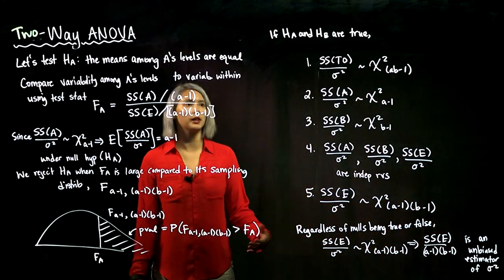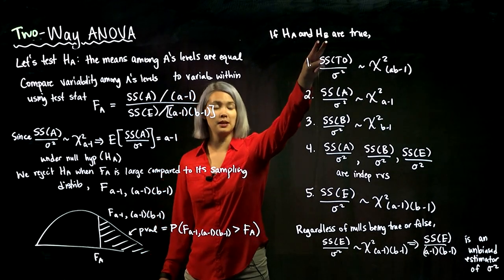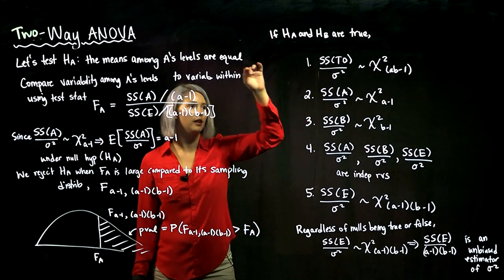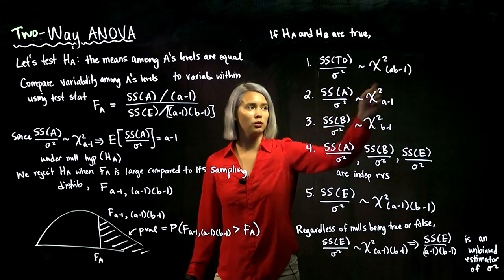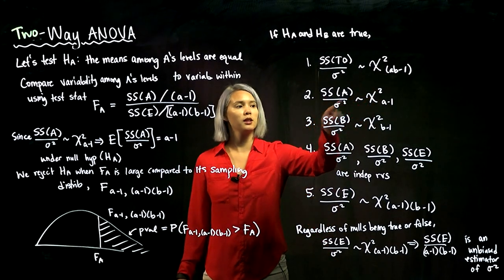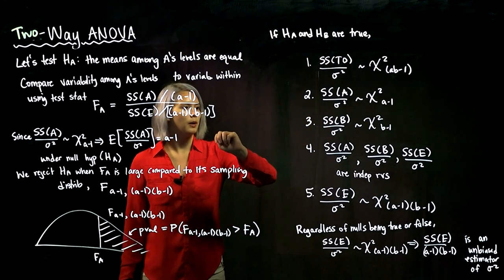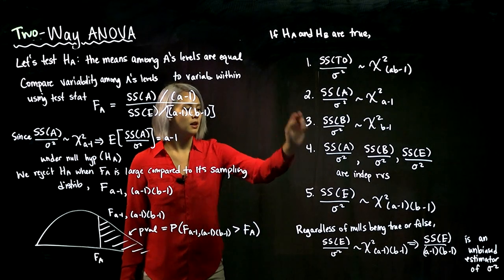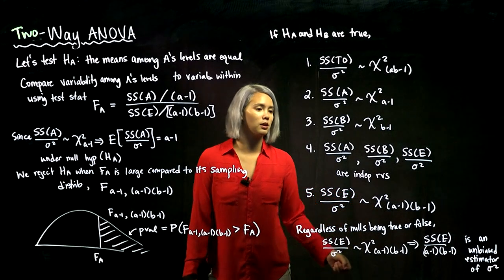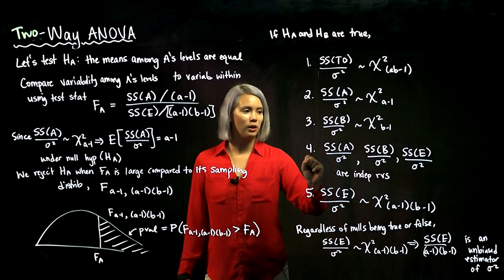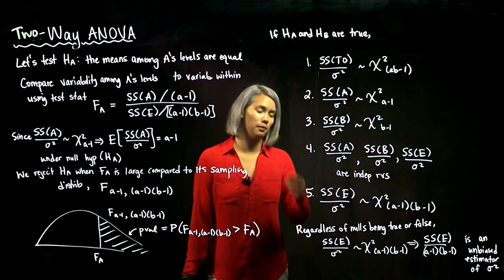In the previous video we figured out a few things. If the means among A's different levels and among B's different levels are equal, then SS_total over sigma squared is chi-squared distributed with AB minus 1 degrees of freedom. SSA over sigma squared is chi-squared with A minus 1 degrees of freedom, SSB over sigma squared similarly, and SSE over sigma squared is chi-squared with (A-1)(B-1) degrees of freedom. And finally, SSA, SSB, and SSE over sigma squared are all independent random variables.